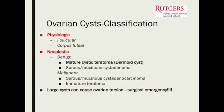Ovarian cysts can be another etiology for pelvic pain. Generally speaking, ovarian cysts can be classified into physiologic and neoplastic. The physiologic ones are follicular or corpus luteal cysts. The neoplastic ones include benign and malignant types. Mature cystic teratomas — dermoid cysts — are the most common benign neoplastic ovarian cyst of young women, followed by serous and mucinous cyst adenomas.